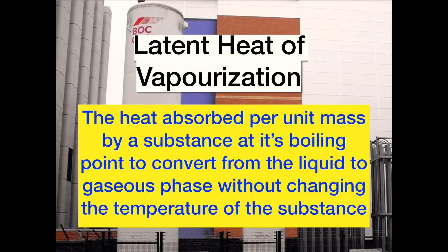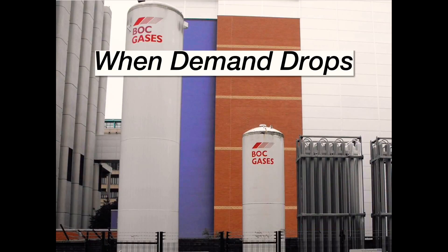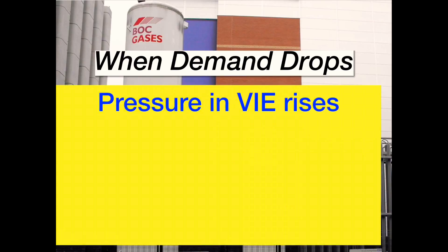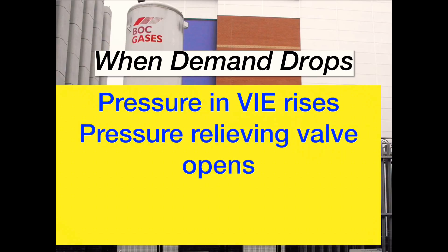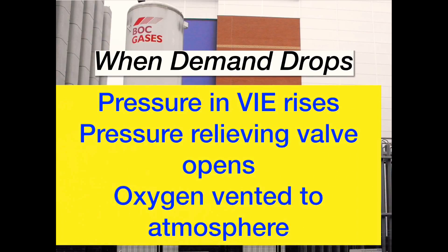The optimum pressure in the VIE is around 700 kilopascals. If the oxygen use of the hospital were to suddenly undergo a large downturn, the pressure in the VIE would rise, potentially risking an explosion. To prevent this, there is a pressure-relieving valve which will vent oxygen to the atmosphere at pressures above this.